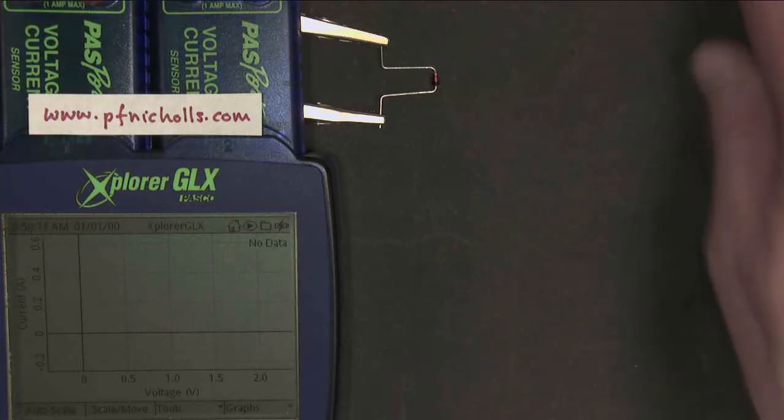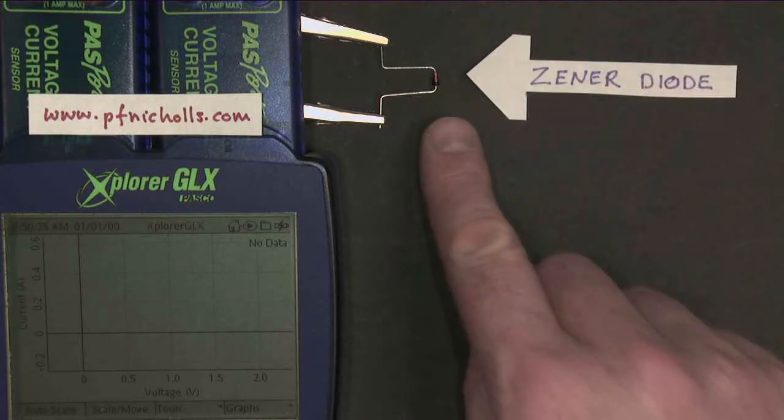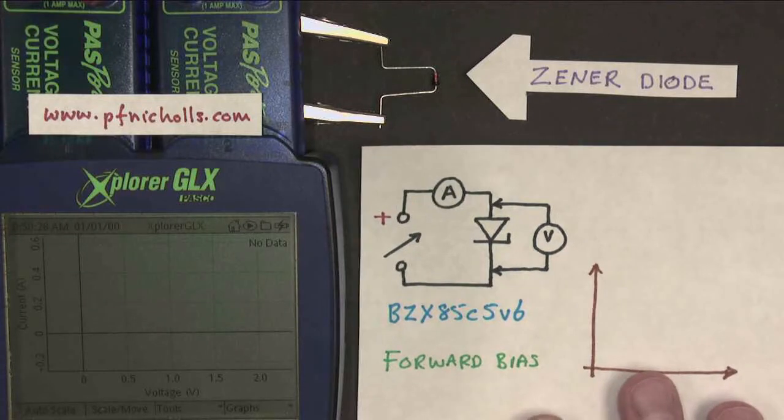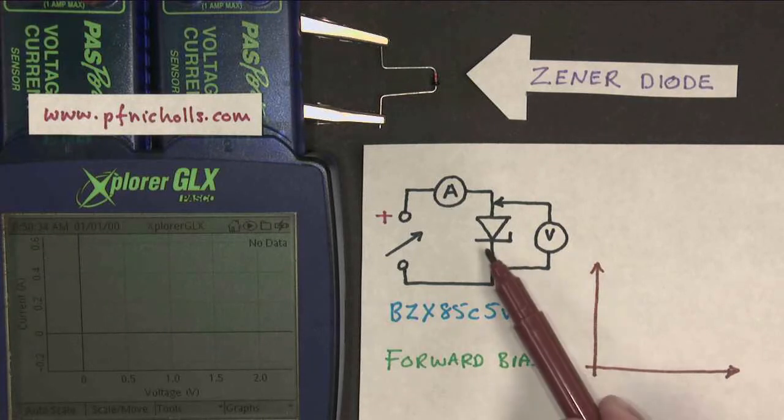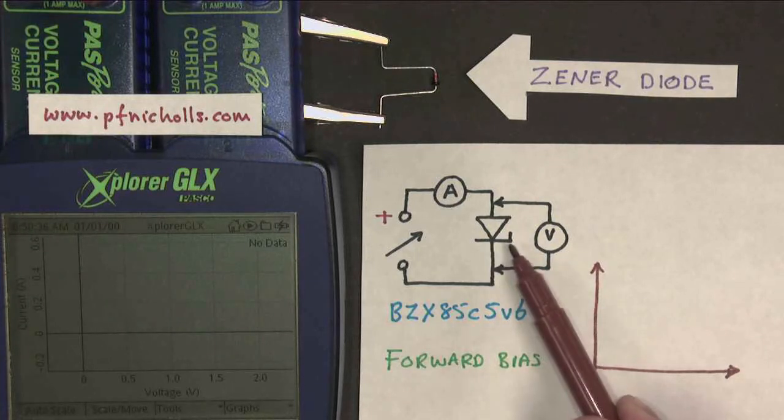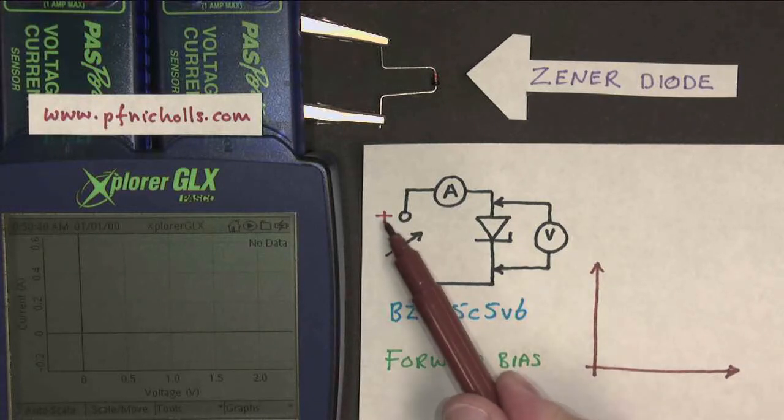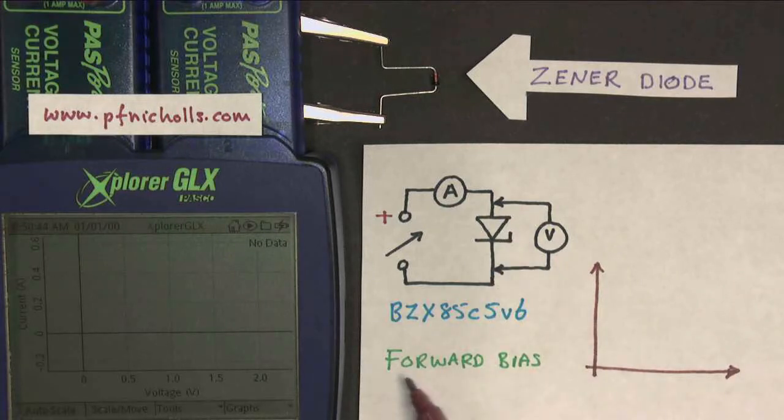This video is about this component, which is called a Zener diode, and I've built this circuit to help me investigate it. Here is my Zener diode symbol, and as you can see it's a regular diode with a little tag on the edge. I've got a power supply, not in the camera, where I've got the positive up here, so current's going to go this way. This is forward biased.